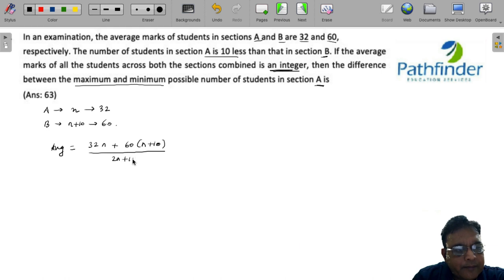Which is equal to 92 times N plus 600 upon 2N plus 10.